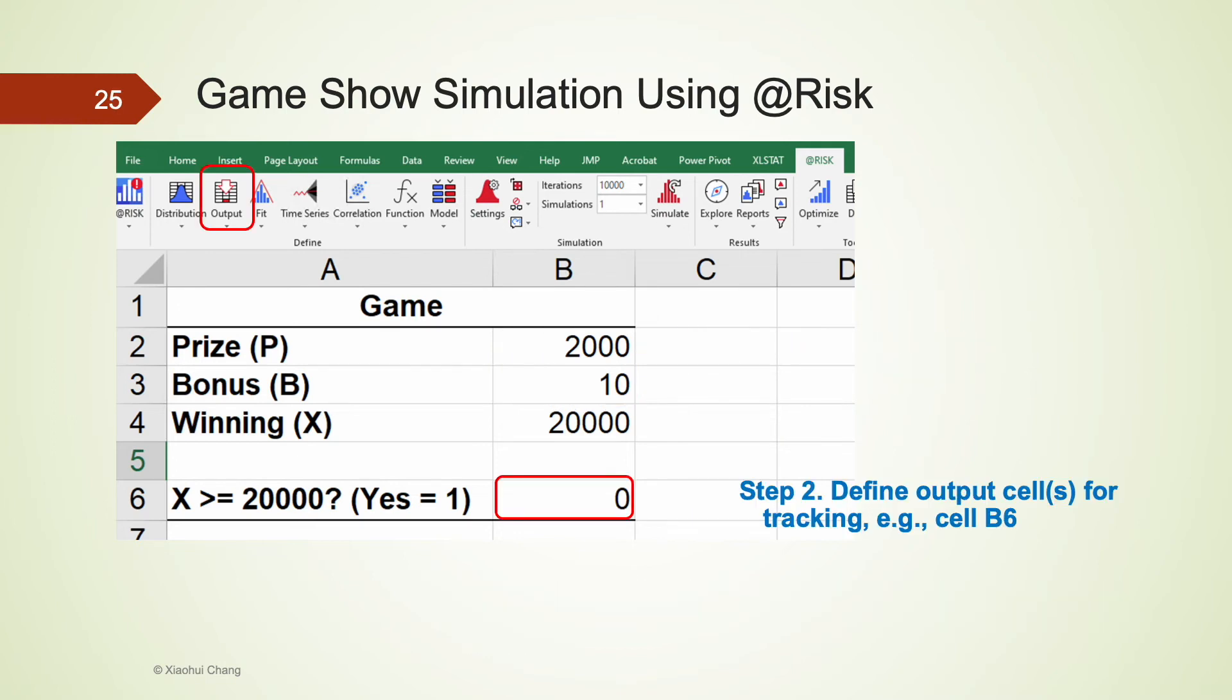In step two, we define our output cell. It could be one or it could be multiple outputs in @Risk. This way @Risk would understand which variable we are interested in tracking and analyzing. For this particular example, it's gonna be cell B6. I first click on cell B6 and then click on output on the top ribbon.